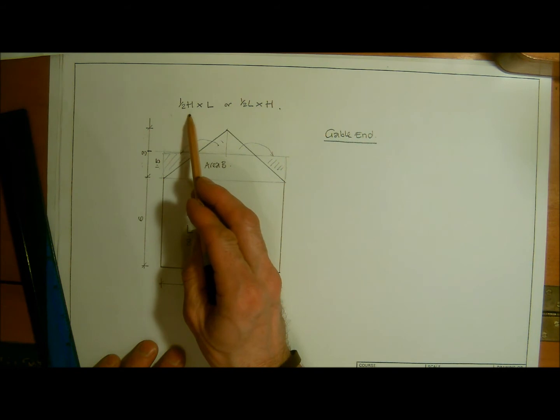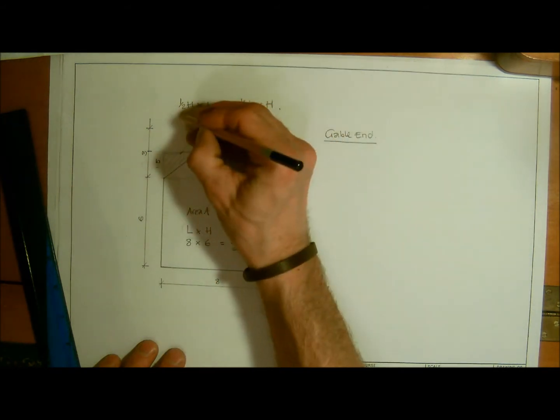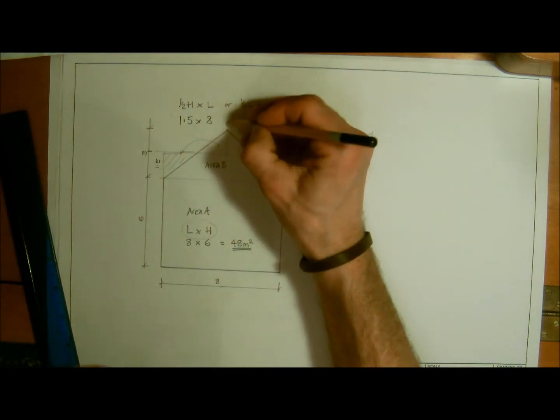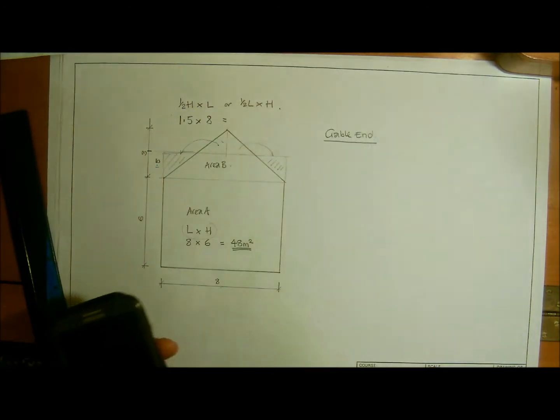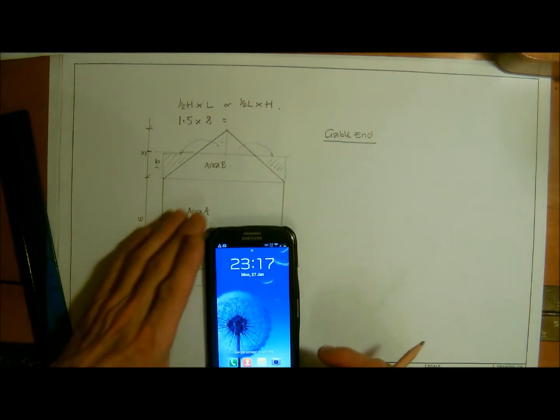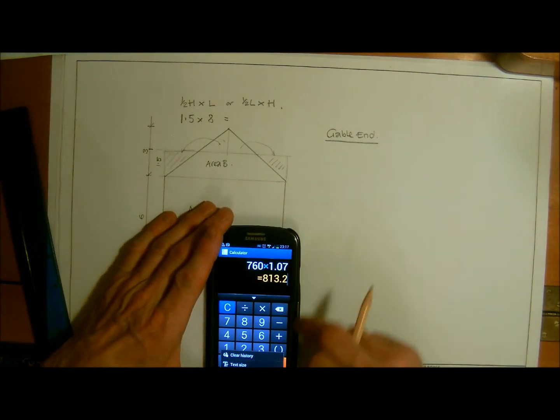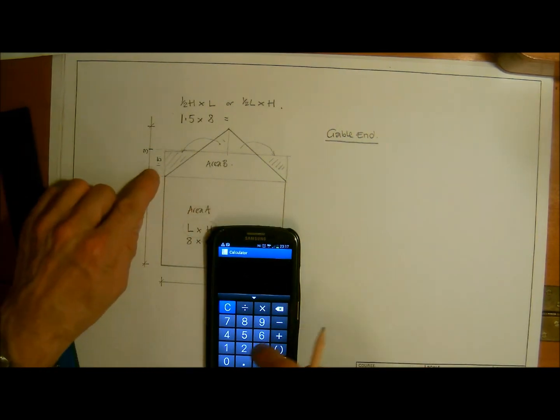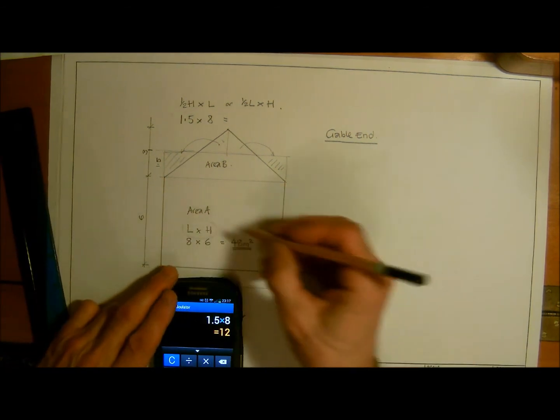Half the height, so we are 1.5 multiplied by the length which is 8. So we're looking at 1.5 multiplied by 8 equals 12.